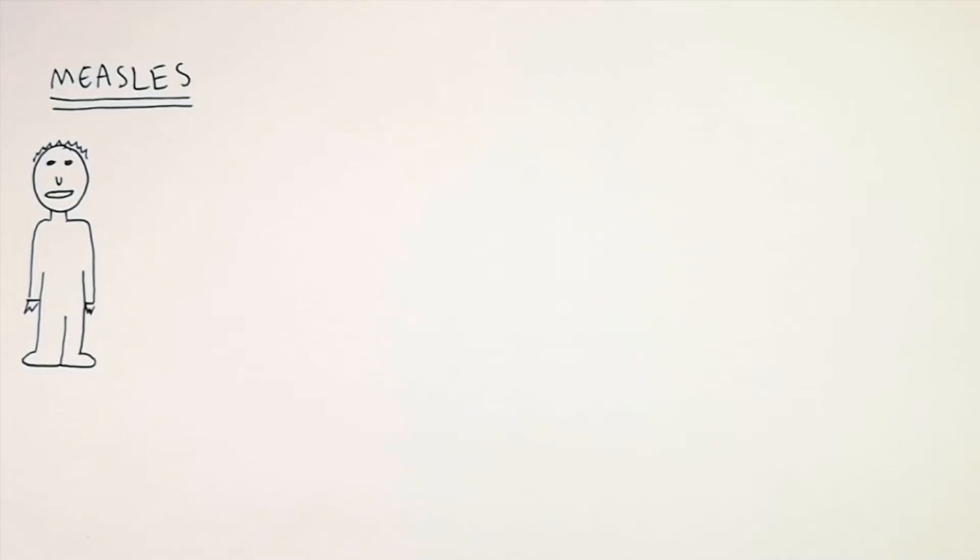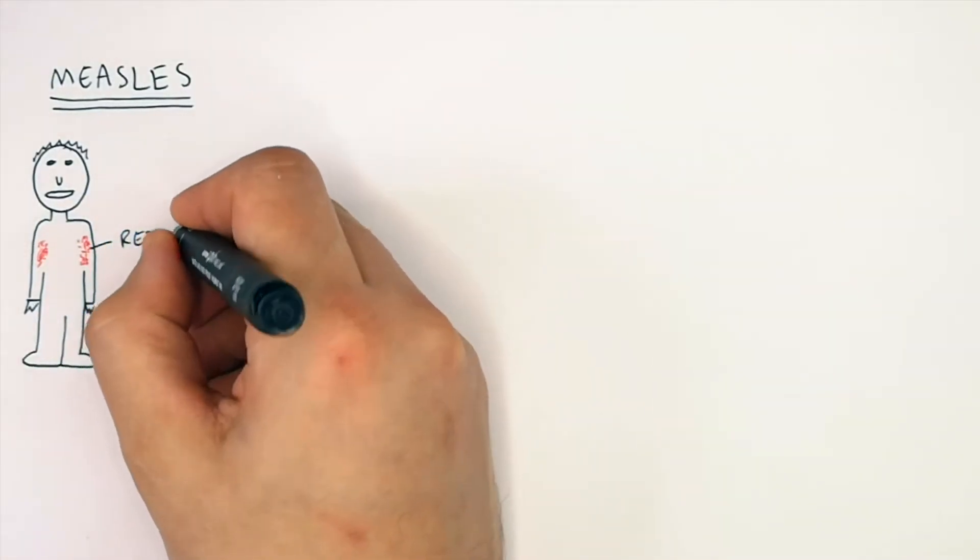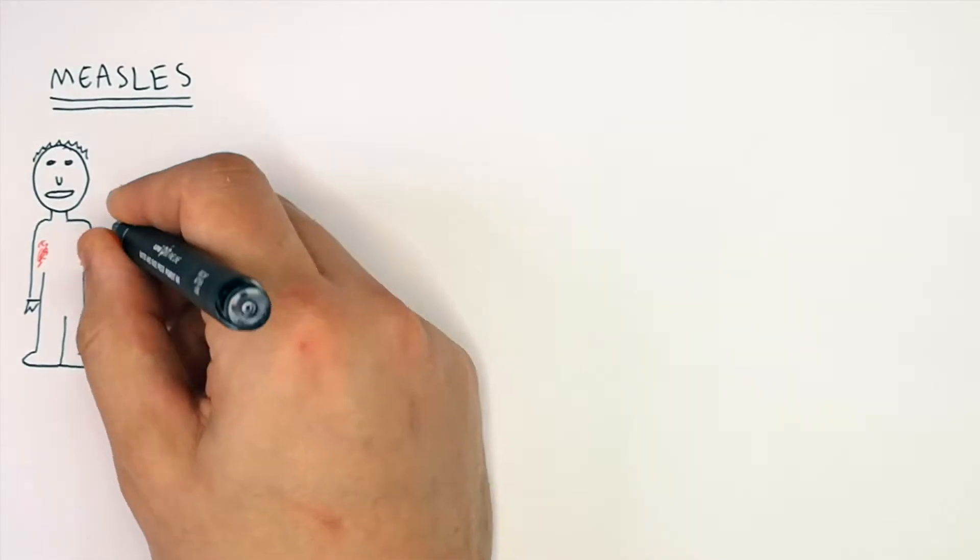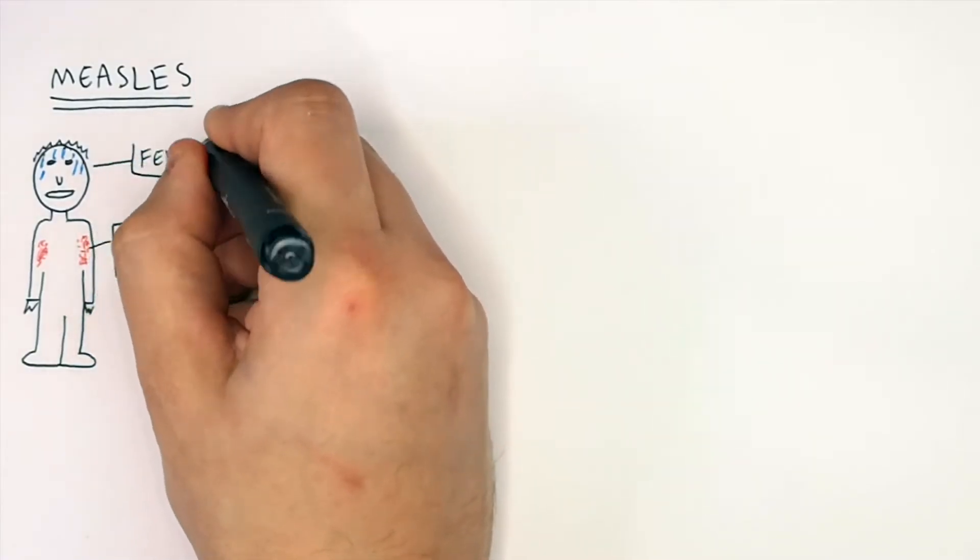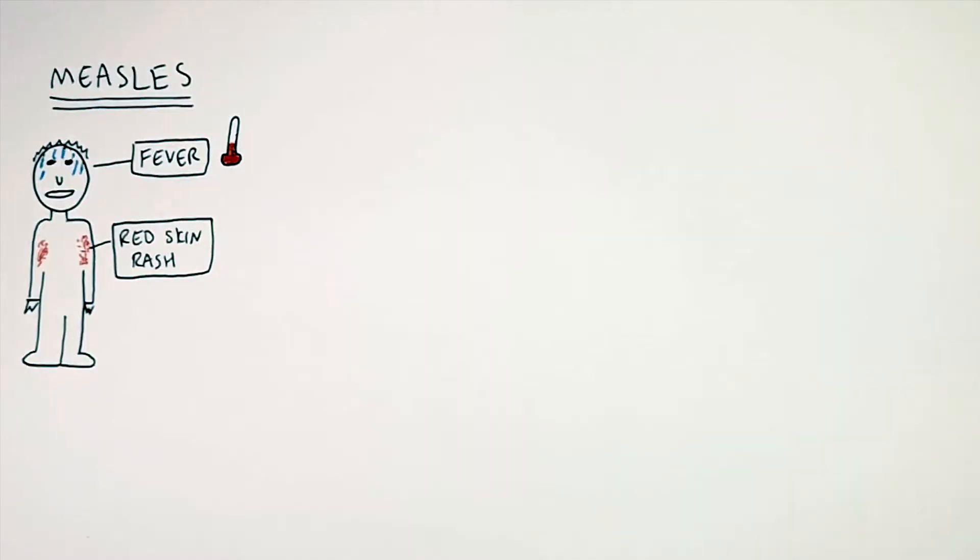A common symptom of measles is a red skin rash. And if you've got measles, another common symptom is going to be a high fever, an increased body temperature.